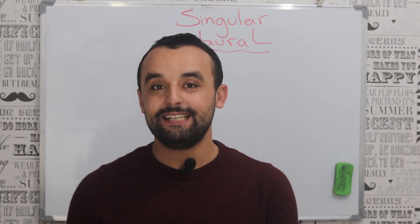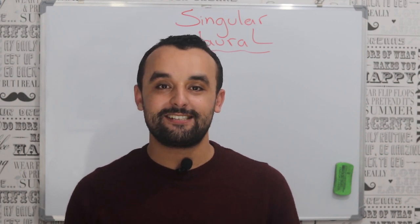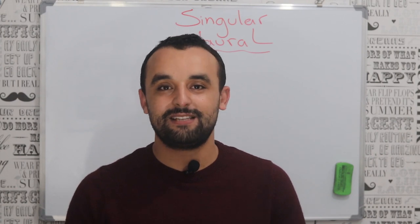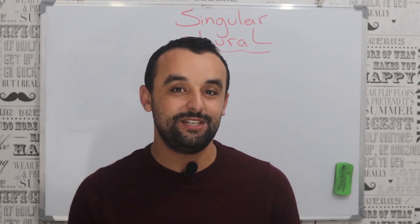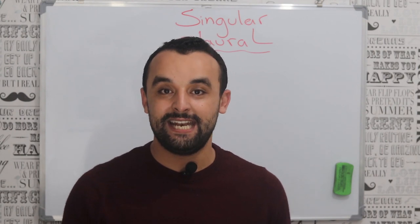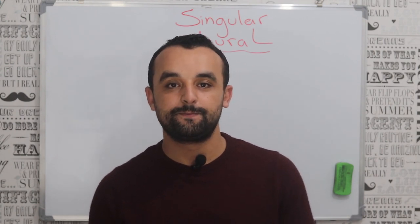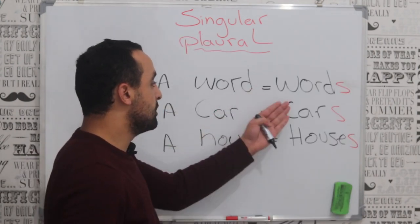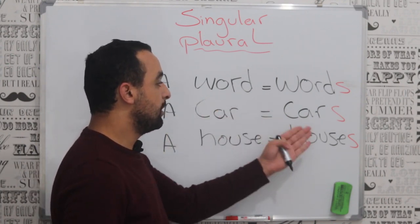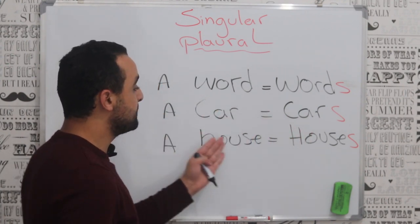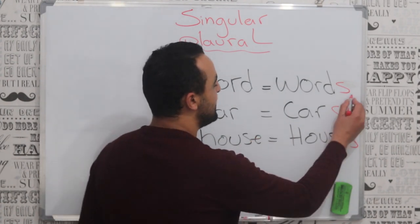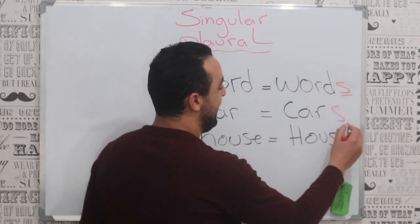I think it's super easy to make a singular noun into a plural noun in English. It seems like a piece of cake because we just add S at the end of the noun. For example, a word becomes words, a car becomes cars, and a house becomes houses — we just add S at the end of the word.